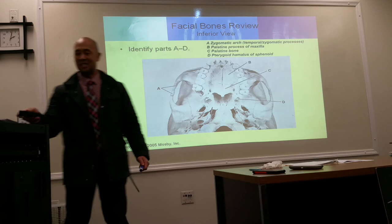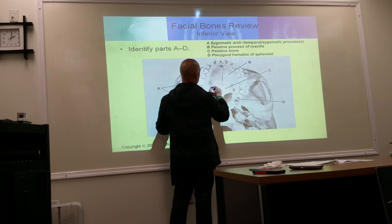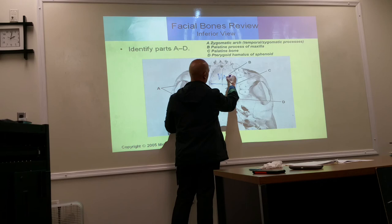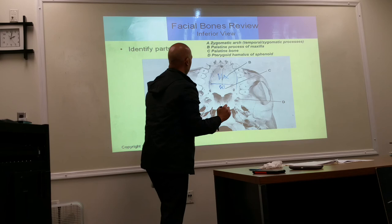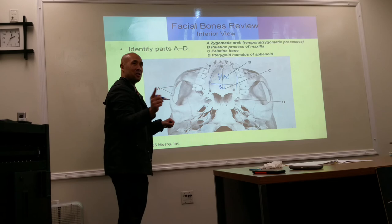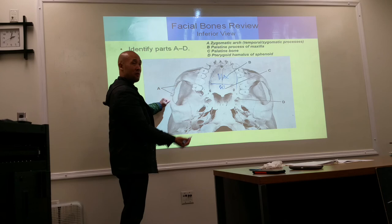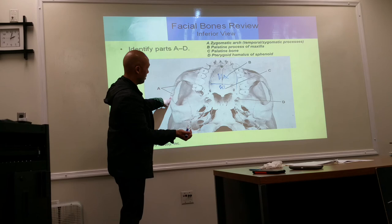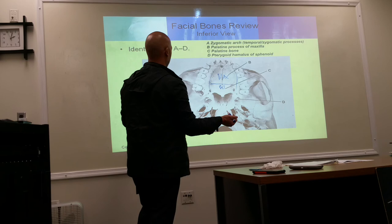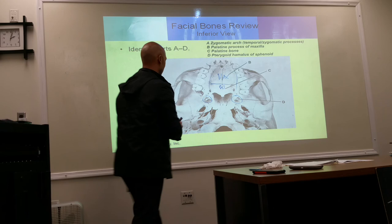On the SMV projection, looking from the bottom up: the hard palate is visible, with the palatine process of the maxilla anteriorly and the palatine bone posteriorly. The zygomatic arches — called jug handles in this inferior-to-superior view — are identified. The pterygoid hamulus of the sphenoid bone is also visible, along with the superior and inferior orbital fissures.